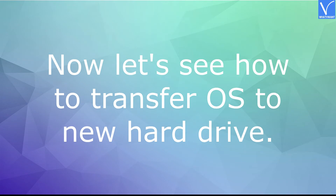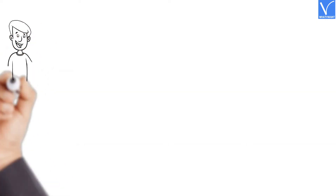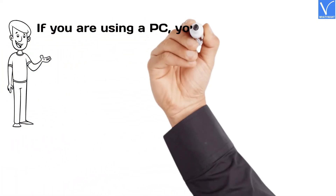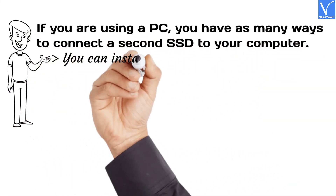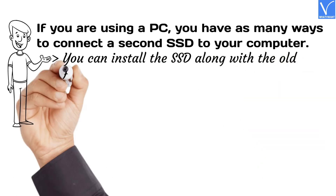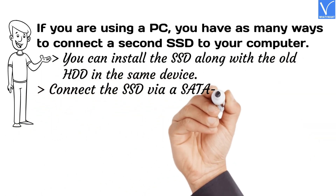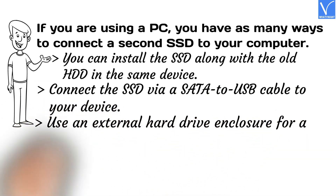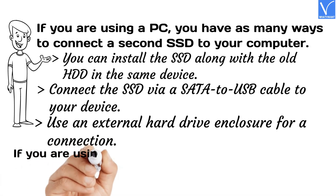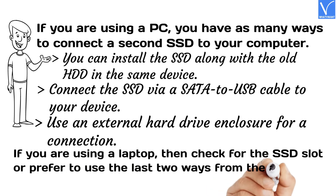Now let's see how to transfer OS to a new hard drive. First, connect or install the new SSD to your PC. If you are using a PC, you have several ways to connect a second SSD: you can install the SSD along with the old HDD in the same device, connect the SSD via a SATA to USB cable, or use an external hard drive enclosure. If you are using a laptop, check for an SSD slot, or prefer to use the last two connection methods.